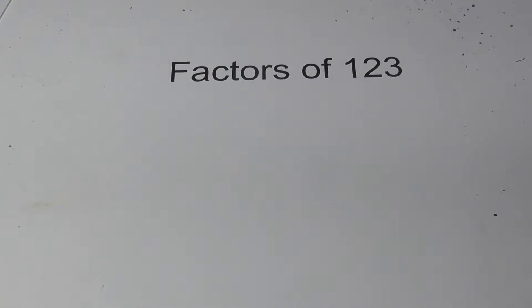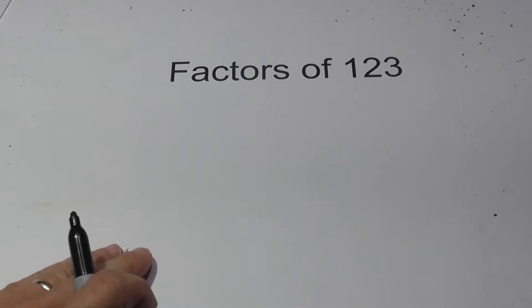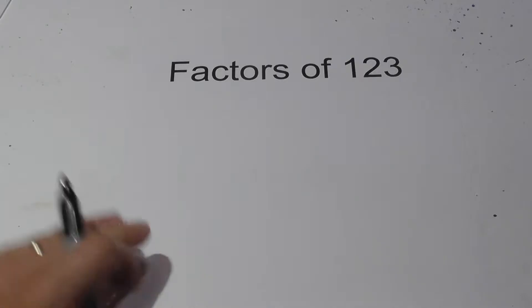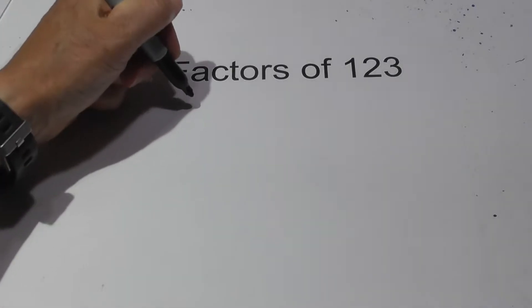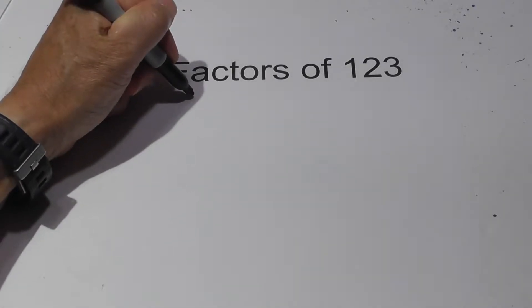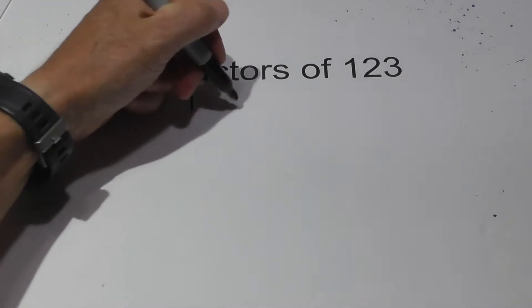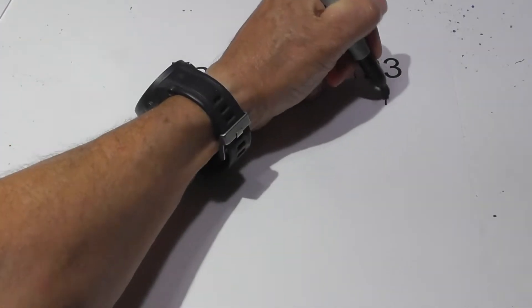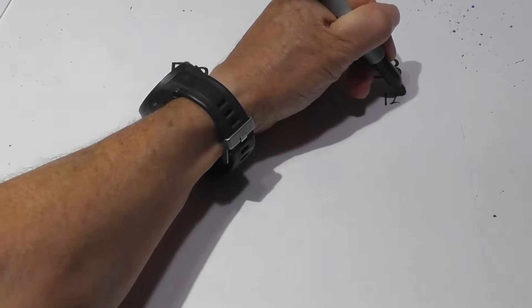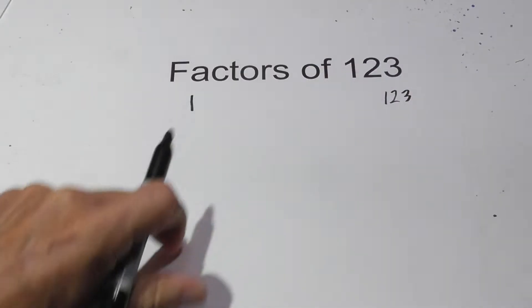Welcome to Moo Moo Math and Science. Today the factors are 123 and 124. Let's begin with 123 — it is a composite number, so I'm going to begin with 1 times 123.